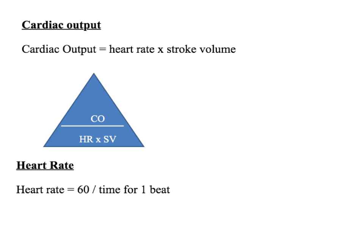First of all, cardiac output, which is the heart rate times by the stroke volume. The cardiac output is the volume of blood pumped out of the heart per minute. If you like a triangle, cardiac output is at the top, with heart rate and stroke volume at the bottom.